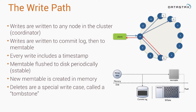Besides writes having timestamps, Cassandra also doesn't do any updates or deletes in place. The SSTables that get written are immutable, and so is the commit log. What Cassandra actually does when you delete data is write a special record called a tombstone — a marker that says, as of this timestamp, there's no data here for this column anymore.